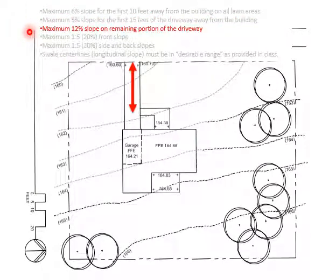The next standard tells you that you're allowed a 12% slope on the remaining portion of the driveway. So you come out 15 feet. That first 15 feet can be a max of 5% and then the remainder can be up to 12%.